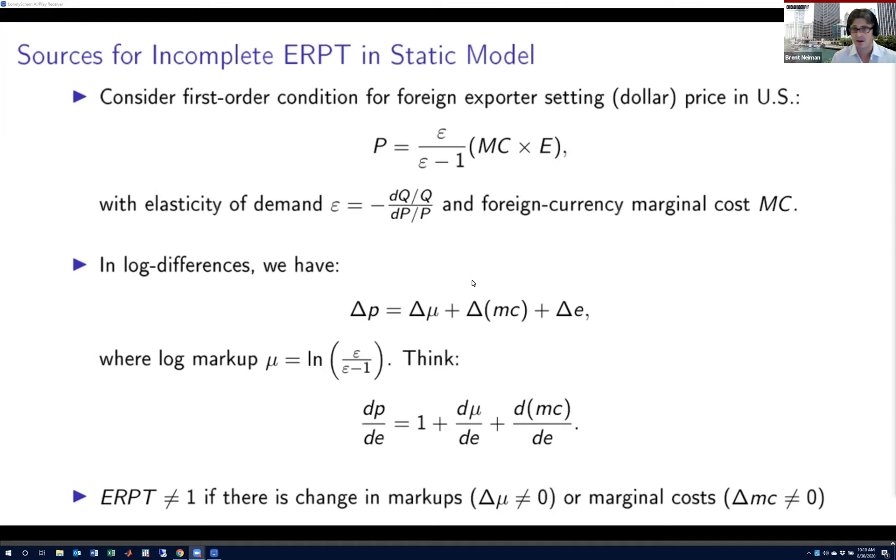So I would start with the most basic first-order condition that's going to come out of any super simple static flexible price maximization problem, where a firm wants to maximize revenues less costs by setting a price. And you get this expression that the price P—in this case, let's assume it's the dollar price that an exporter would be setting on sales to the US—is equal to some markup term here times the marginal cost expressed in dollars. I'm going to stick with the convention that E is the dollar price of a unit of foreign currency, such that MC then would be the foreign currency denominated marginal cost. This markup is itself a function of the elasticity of demand for the good. So it's epsilon over epsilon minus one, where this epsilon might be something like two, three, four, a positive value.